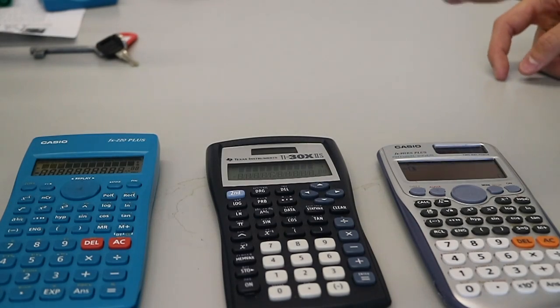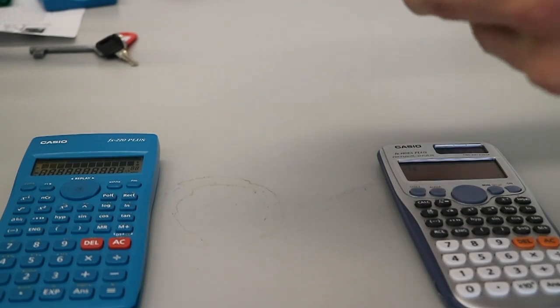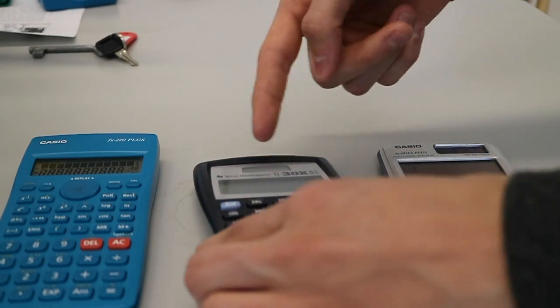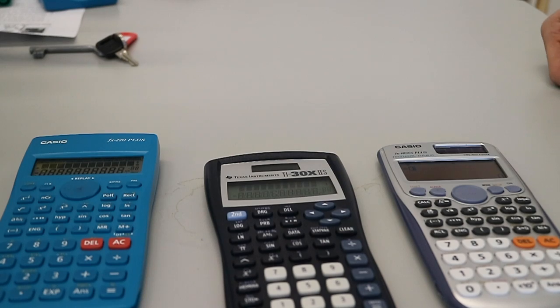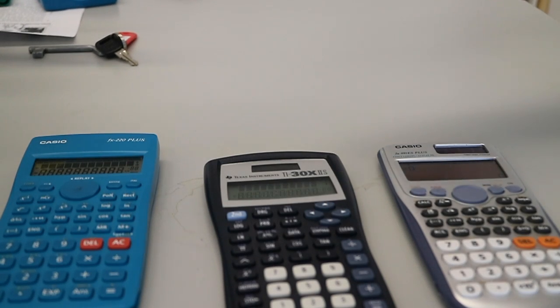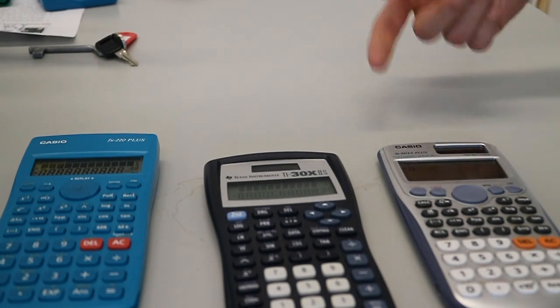The second calculator, the Texas Instruments, has the feature that you can put your sine in right away. As you can see, you don't even have to put the multiplication sign in between and it still works, which is a disadvantage mentioned in the FERT calculator.